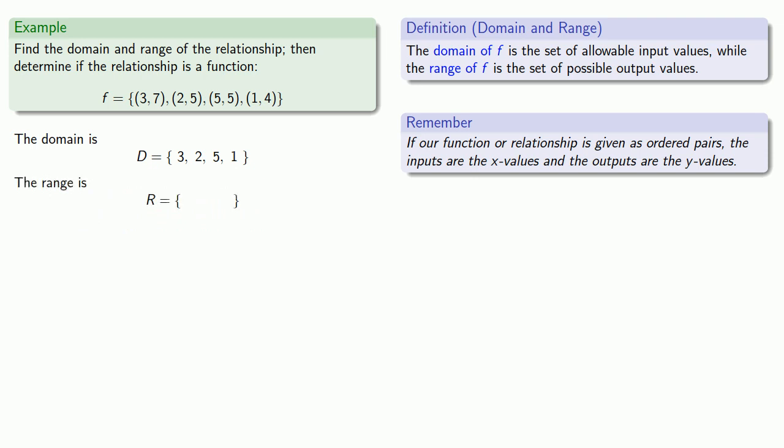Meanwhile, the range is the set of output values. Those are the y values, and those are 7, 5, 5 again, and 4. And since we're confirming a set, we list each element only once. So our range is 7, 5, 4.